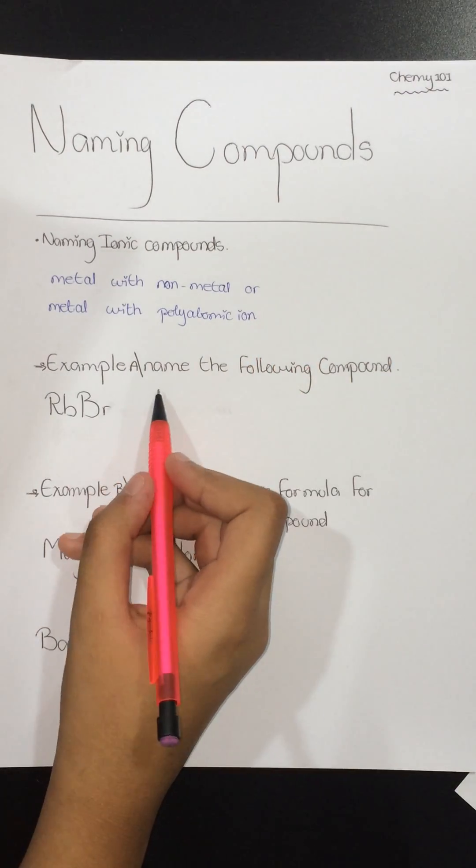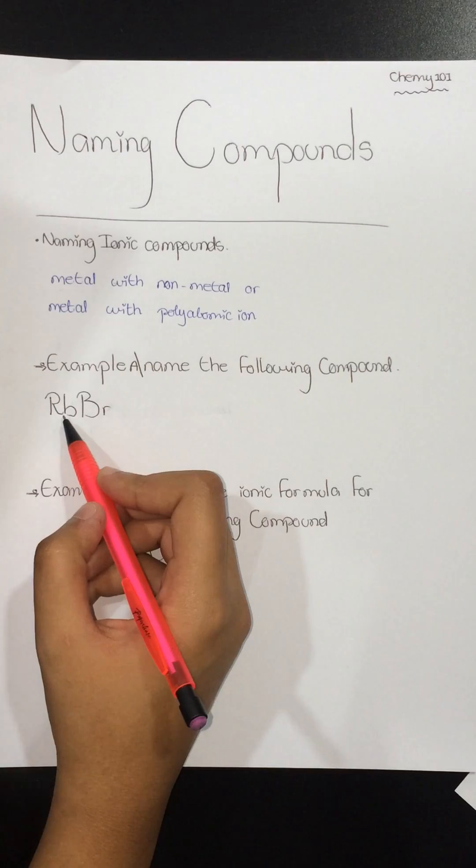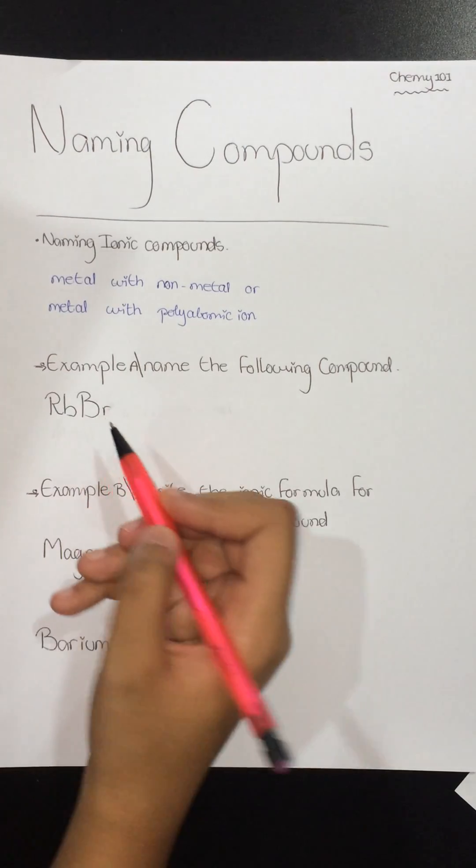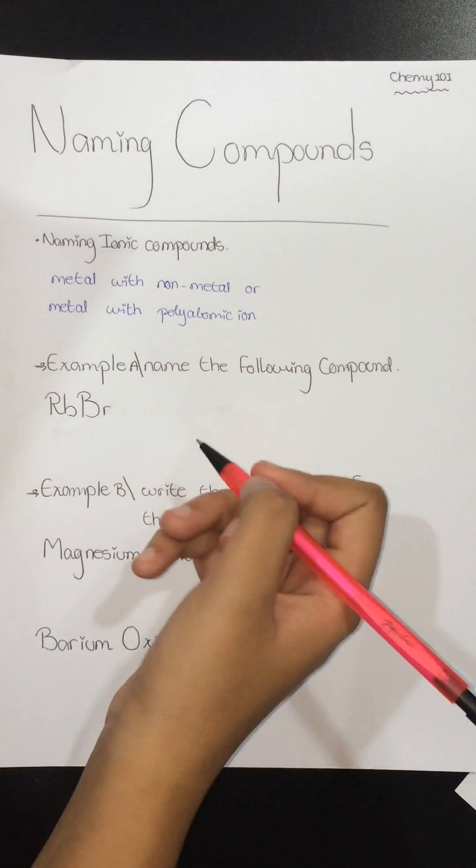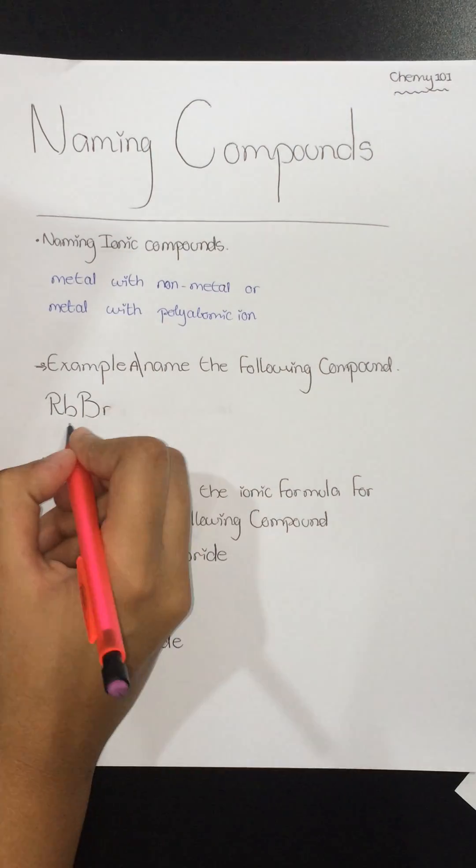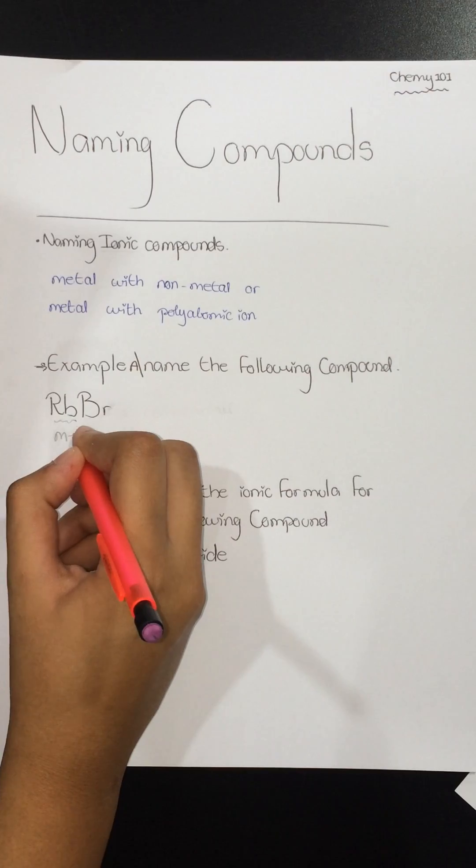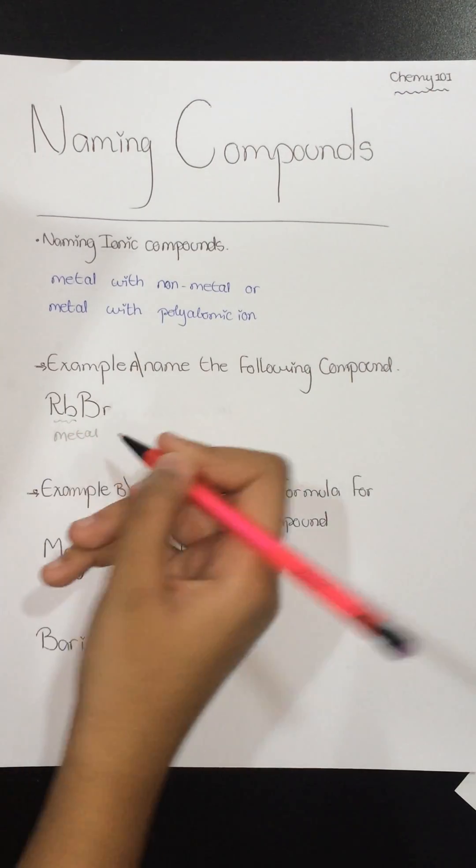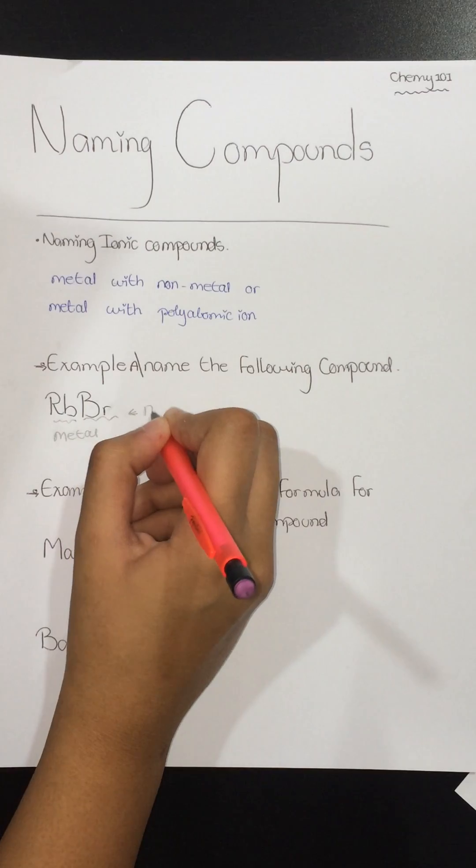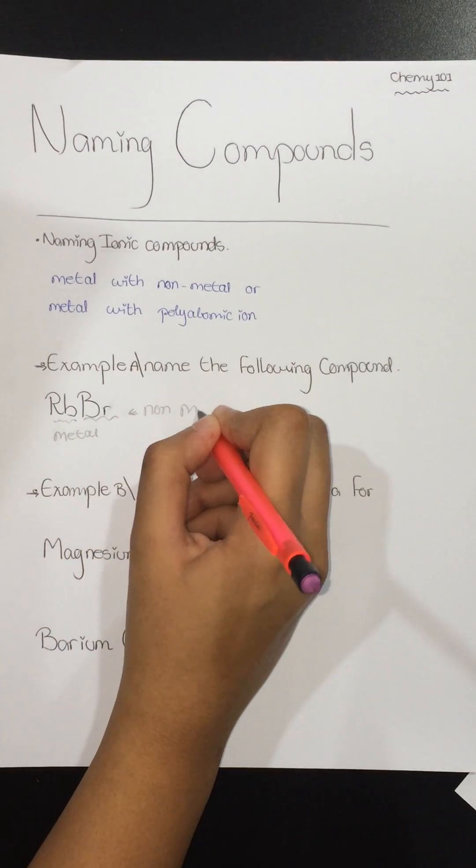For example, here we have rubidium and bromine and they want us to name it. So first we have to identify the metal. Here we have Rb as the metal and Br as the non-metal.